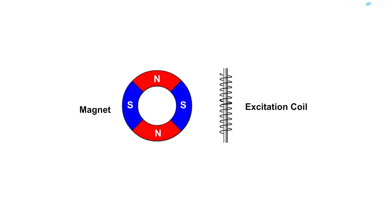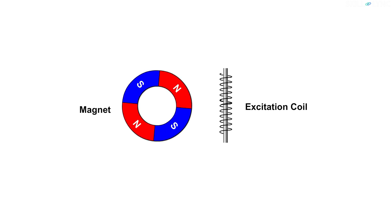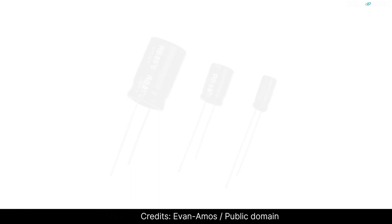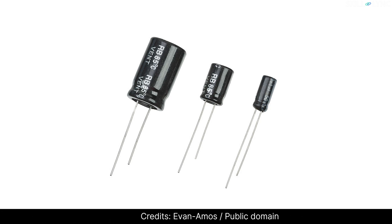The excitation unit consists of a permanent magnet and an exciting coil. The magnet is attached to the flywheel and the coil is wound over a stator. When the magnet rotates, it induces an EMF in the coil. The next component is a capacitor, which is a charge storage device made up of two conductors separated by an insulating material.